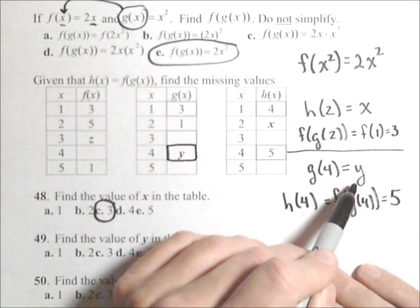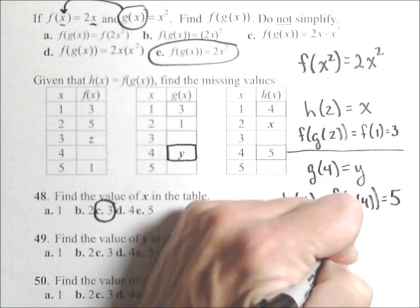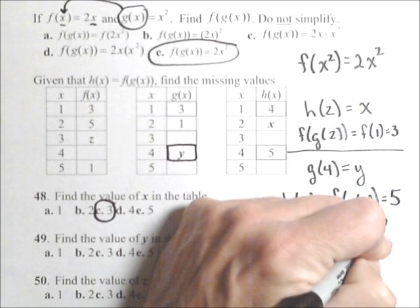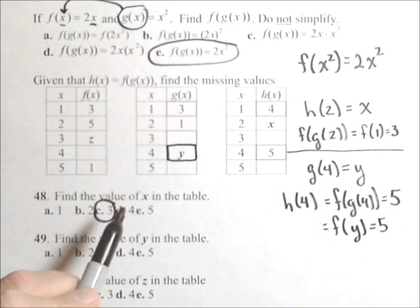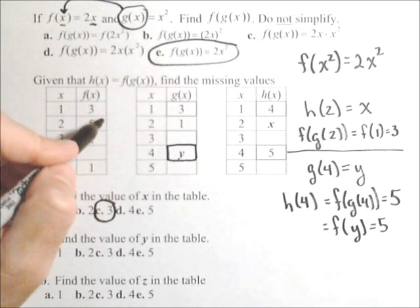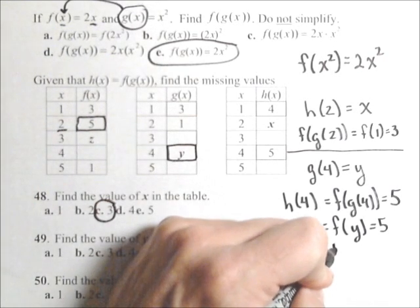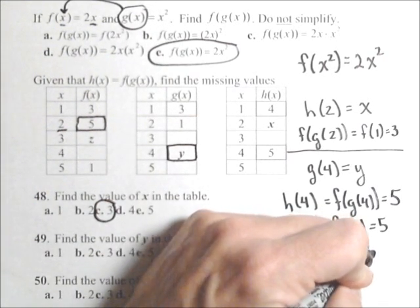We know that g of 4 equals y, so I'm actually just going to substitute that in. So f of y equals 5. So what's the input to f that gives an output of 5? Well, f gives an output of 5 when its input is 2. So we get that y equals 2.